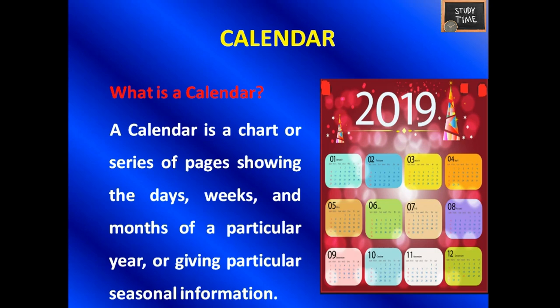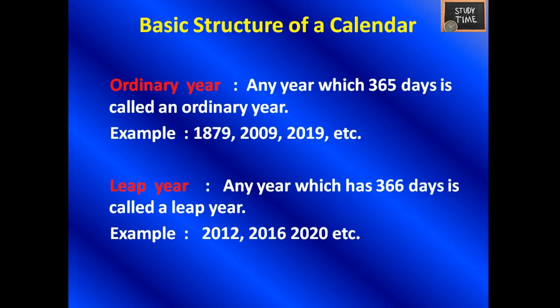What is a calendar? A calendar is a chart or series of pages showing days, weeks, and months of a particular year, or it can give seasonal information. A calendar year can be called either an ordinary year or a leap year. Any year which has 365 days is called an ordinary year — for example, 2009. Any year which has 366 days is called a leap year — for example, 2020.